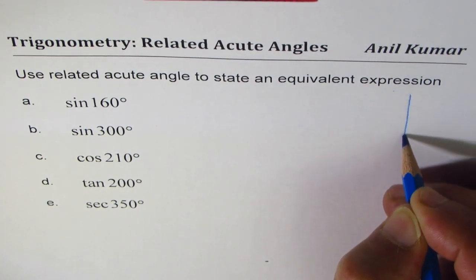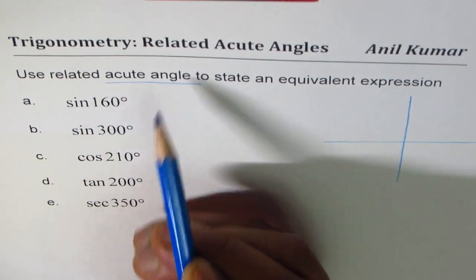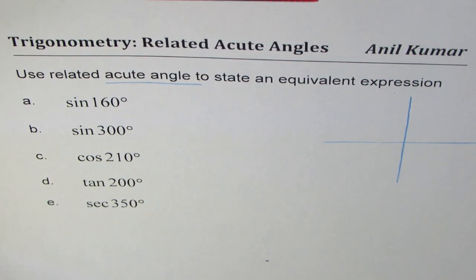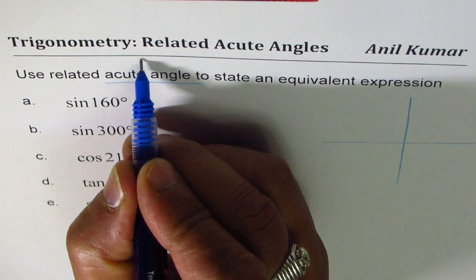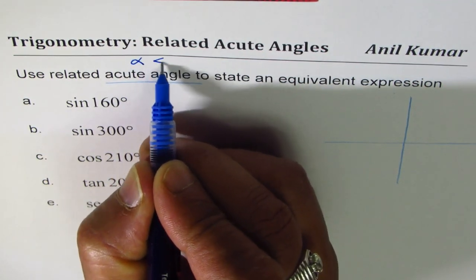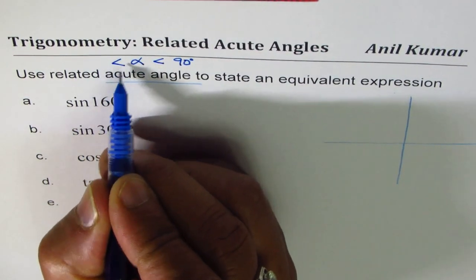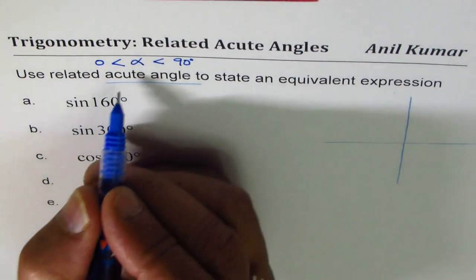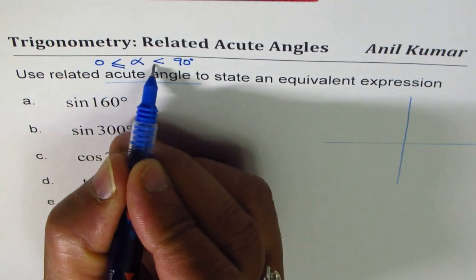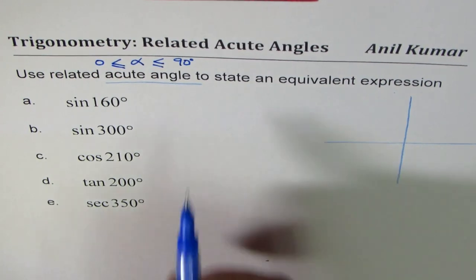Let's first understand what an acute angle is. An acute angle, as the name suggests, is any angle which is less than 90 degrees. So if alpha is the angle, it is greater than zero but less than 90 degrees — that is an acute angle. It is always positive and not more than 90 degrees.